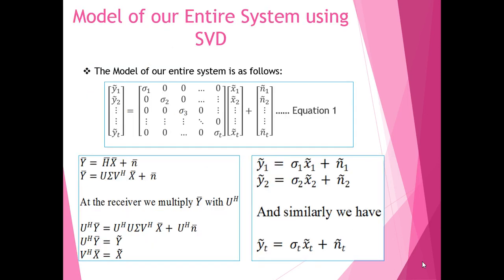After the singular value decomposition, we have the model of our entire system shown in Equation 1. Here, ỹ1, ỹ2, up to ỹT are the received symbols at the receiving end. x̃1, x̃2, up to x̃T are the transmitting symbols at the transmitting end. We find that ỹ1 depends on x̃1 and ñ1, ỹ2 depends on x̃2 and ñ2, and this goes on up to the Tth term.